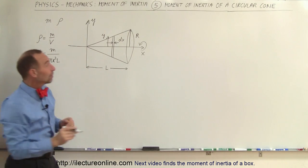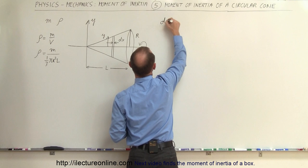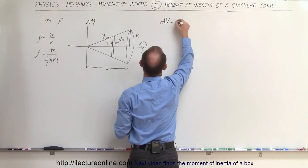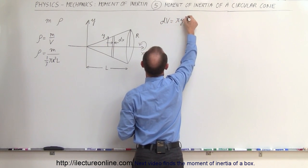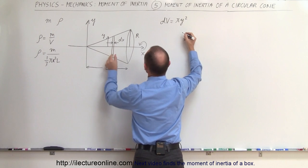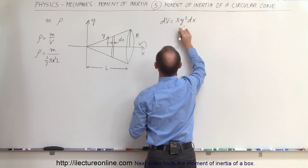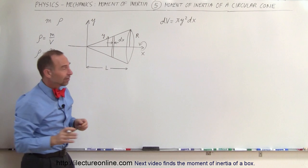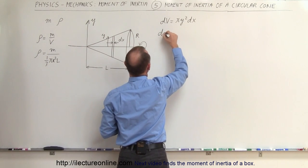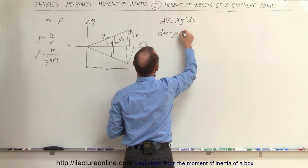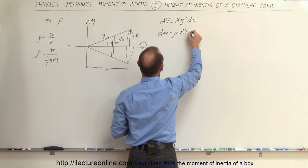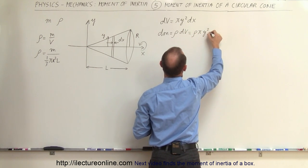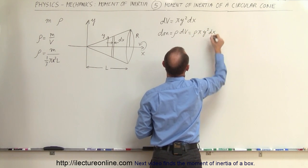The volume element dV is equal to the area of the circle times the thickness dx, so dV equals pi y squared times dx. The mass element dm would be equal to the density times the volume dV, so dm equals density times pi times y squared times dx.